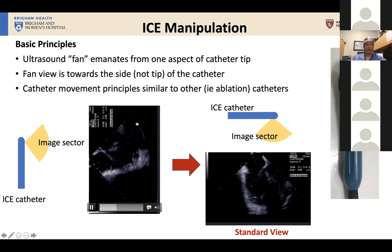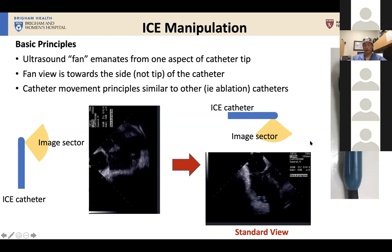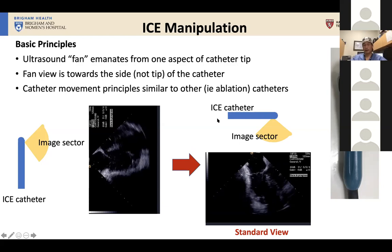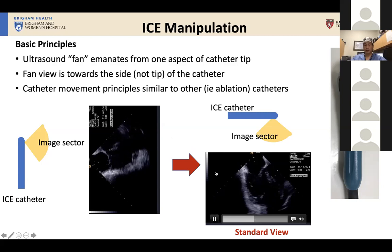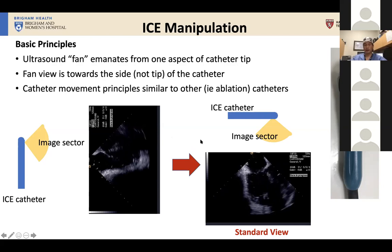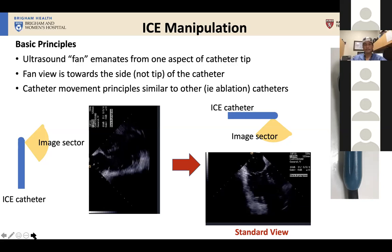The standard display — as most labs in the U.S. use — shows that as the catheter moves from left to right, the image moves from left to right. Generally speaking, the left of the screen is more inferior in the body and the right is more superior. The catheters move very similarly to other catheters you're familiar with, but with more options for movement.